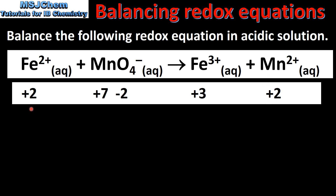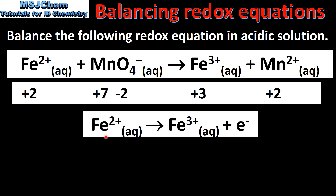For the Fe²⁺ ion we have an increase in oxidation state from +2 to +3, which is oxidation. For the Mn we have a decrease in oxidation state from +7 to +2, which is reduction. So the Fe²⁺ ion is oxidized to the Fe³⁺ ion with the loss of 1 electron.